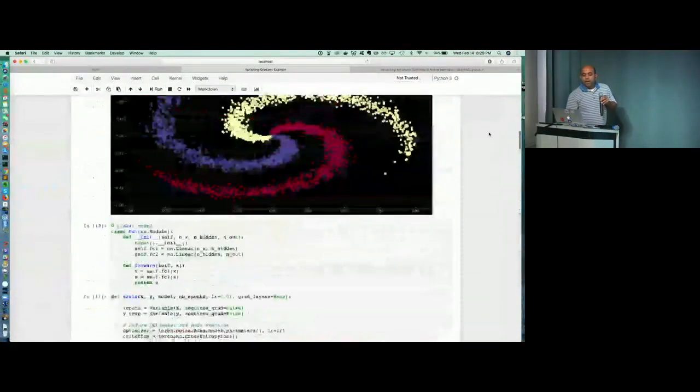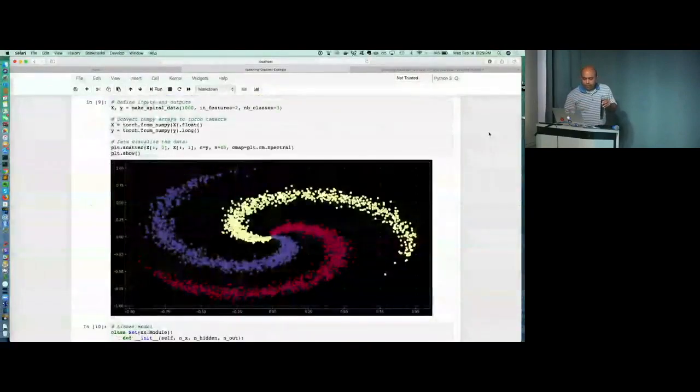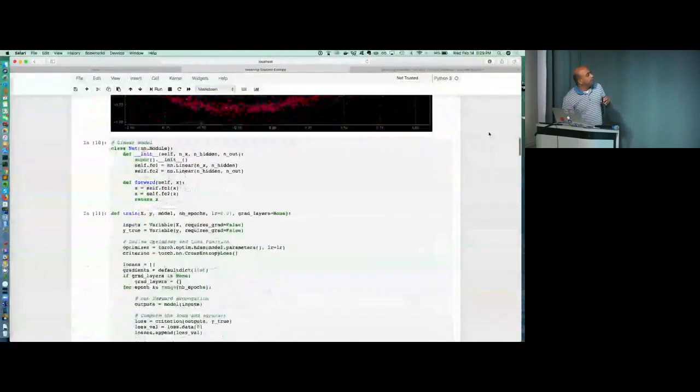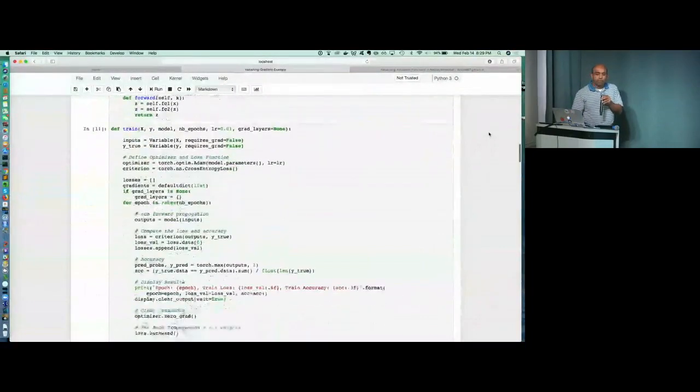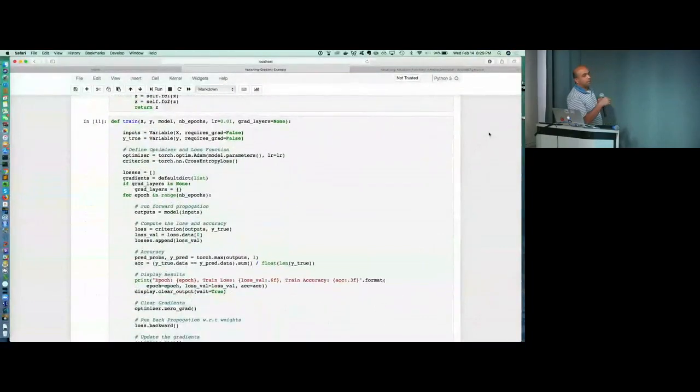Yeah. All right, so this is the same dataset that we just looked at. And then we have this linear model. And I wrote a function train, which is basically the same function I'm going to keep repeatedly running for different network architectures. And you will see this type of workflow in almost everybody's PyTorch code so that they don't want to keep writing their training loop all the time.